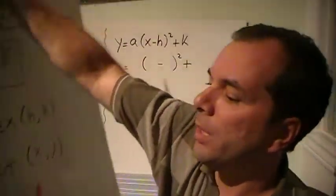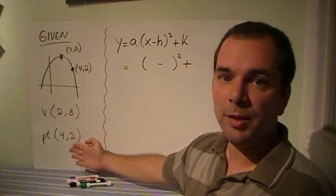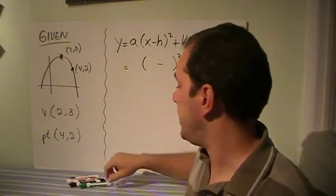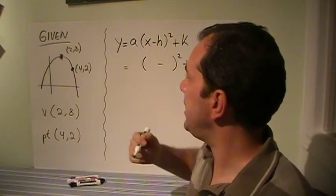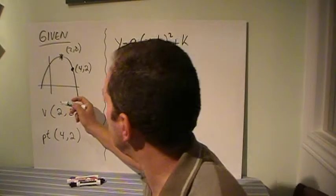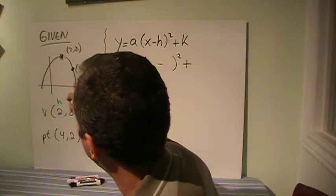Let's look at an example. They can give you the information just saying here's the vertex and here's the point, or they can give you a graph and you just pick which point you want. Here we can tell that the vertex is (2, 8), so that means this is the h and that's the k.